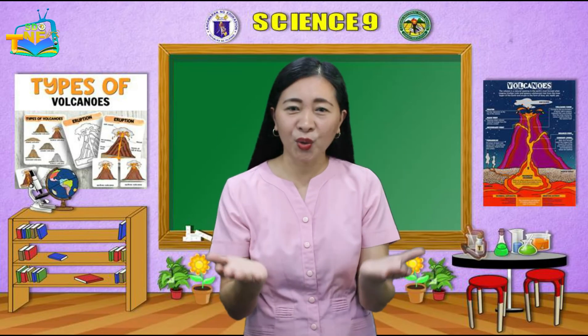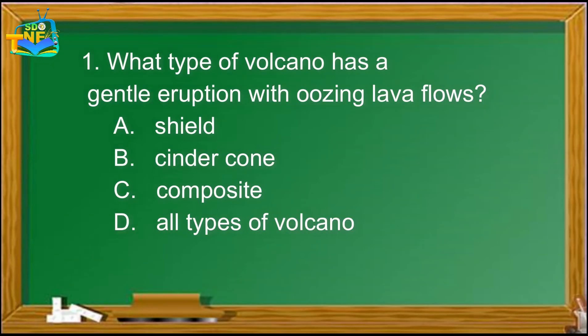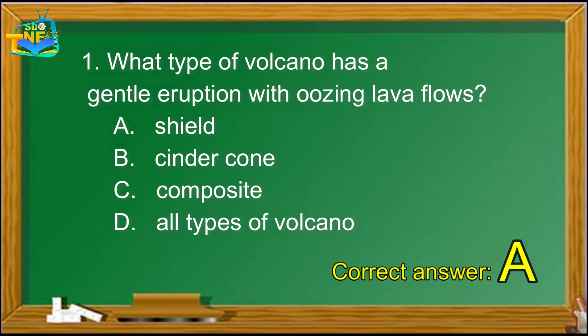Question 1: What type of volcano has a gentle eruption with oozing lava flows? A. Shield, B. Cinder cone, C. Composite, D. All types of volcano. The correct answer is letter A — Shield.